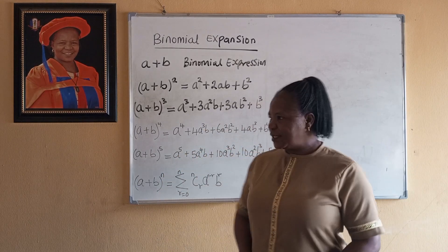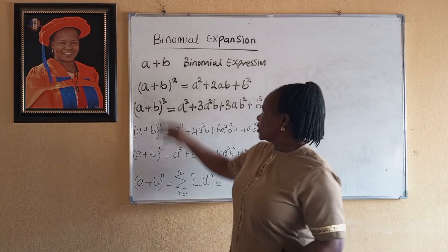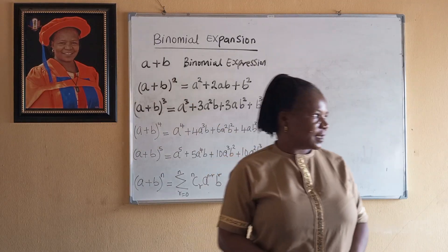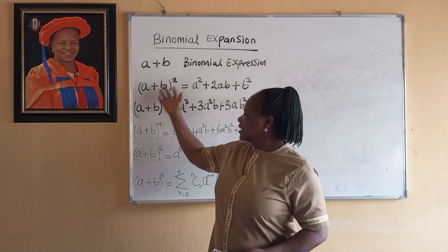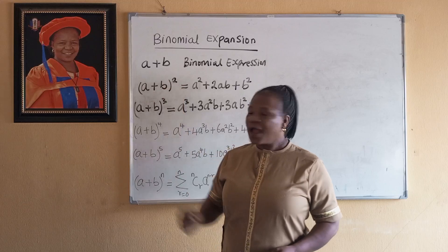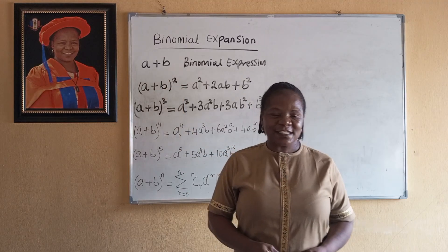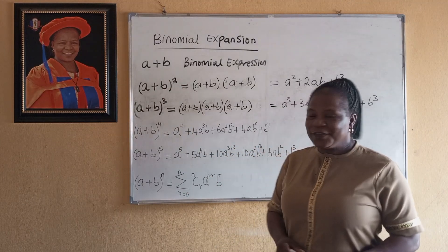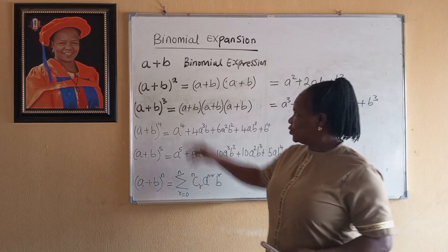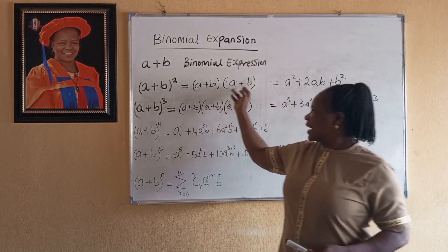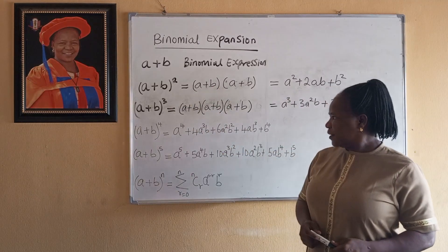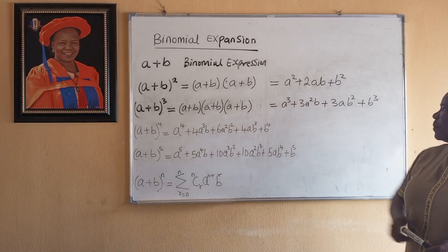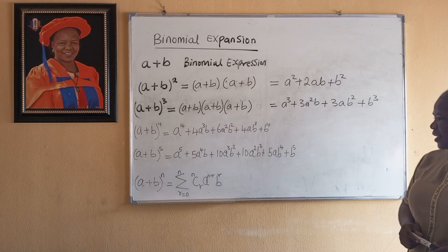A binomial expression is an expression of the form A plus B. When this is raised to a power and you want to expand it, that is binomial expansion. If the power is 2, we have (A plus B) times (A plus B), which is equal to A squared plus 2AB plus B squared.